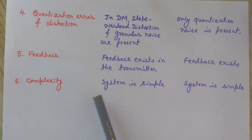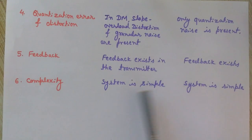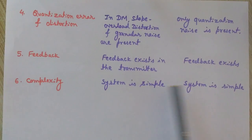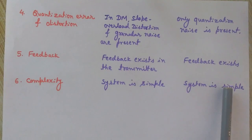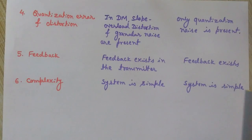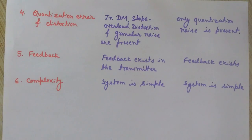On the basis of complexity, both systems are simple and not very complex. Delta modulation and adaptive Delta modulation both use a simple system. This concludes the comparison of Delta modulation and adaptive Delta modulation; in upcoming videos we will cover these in more detail.